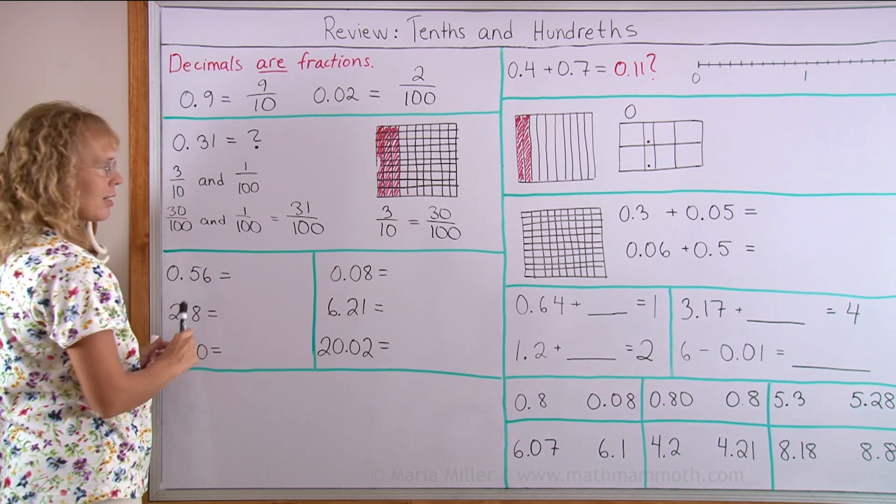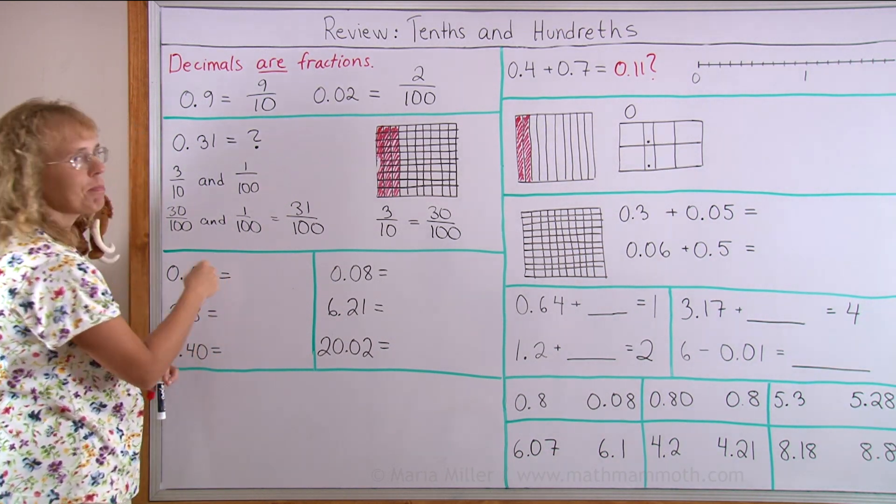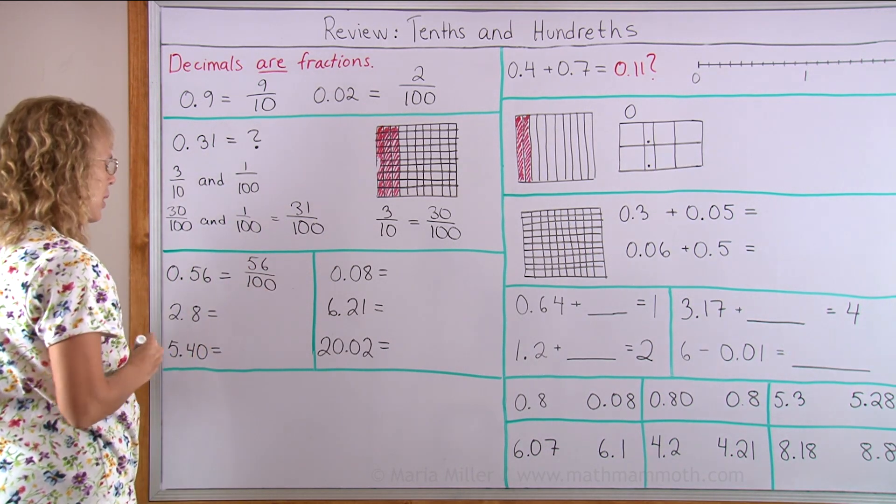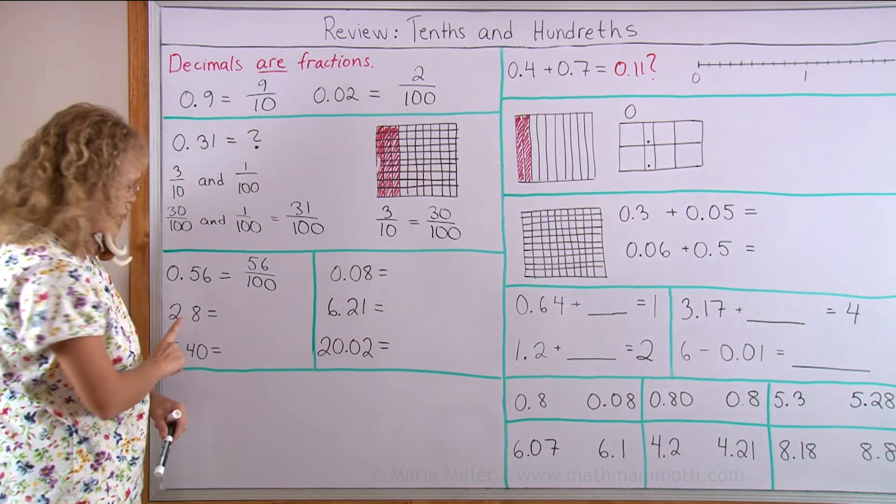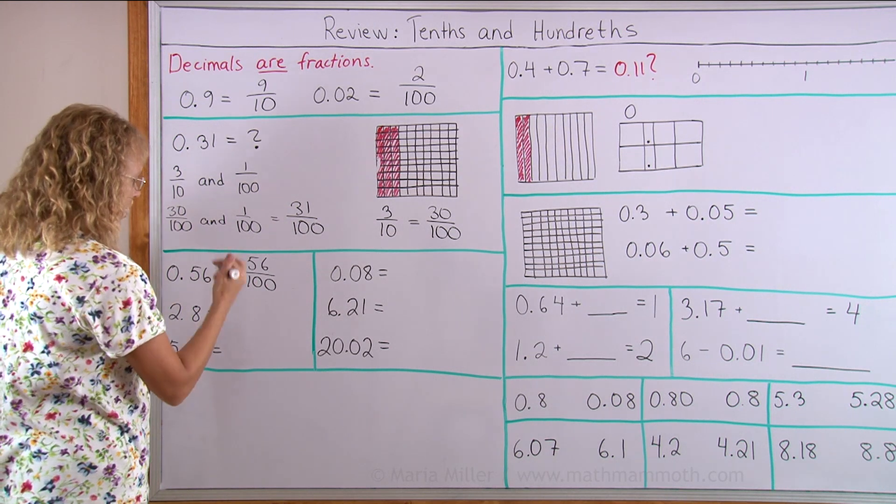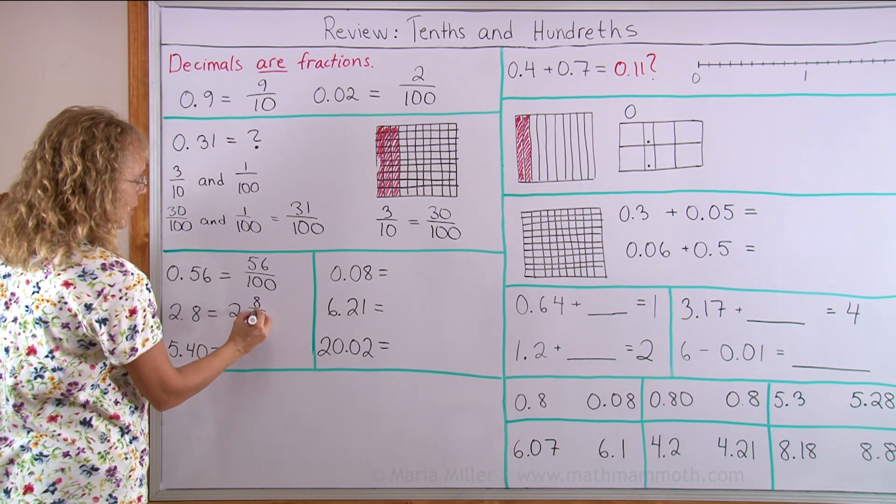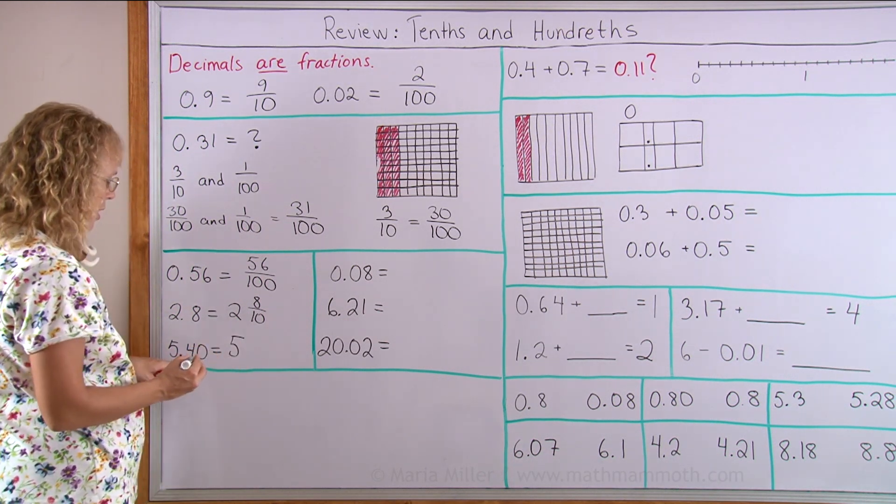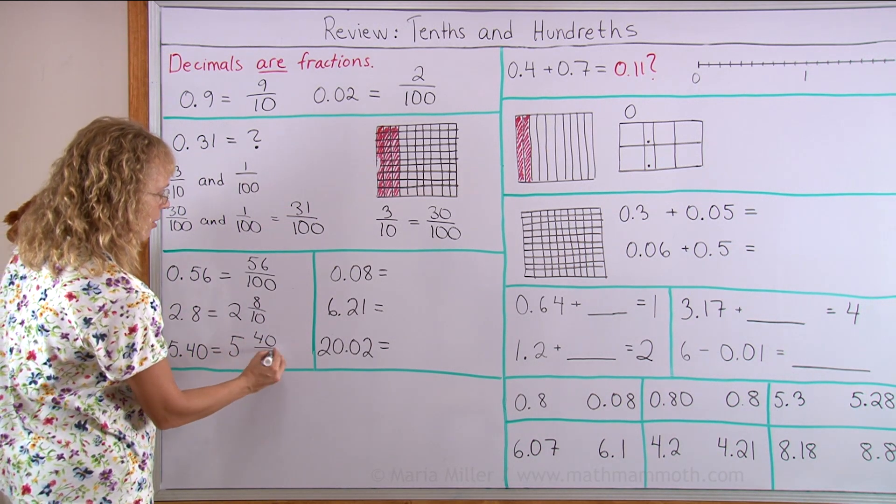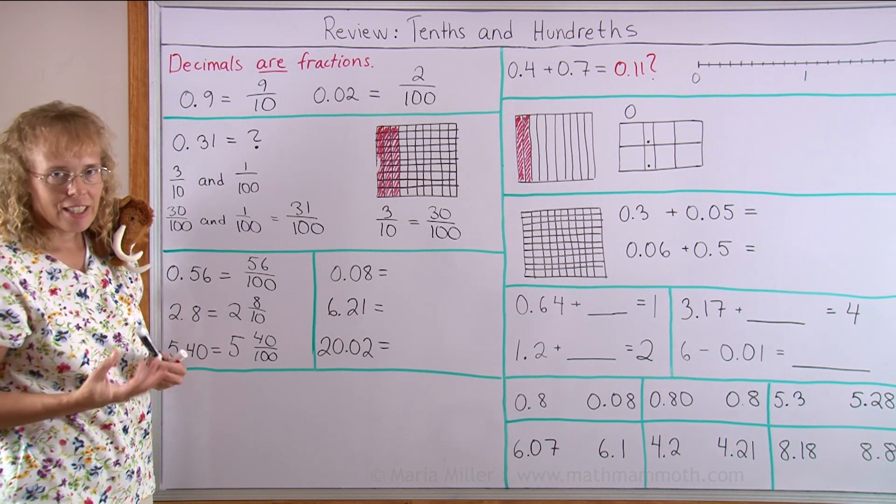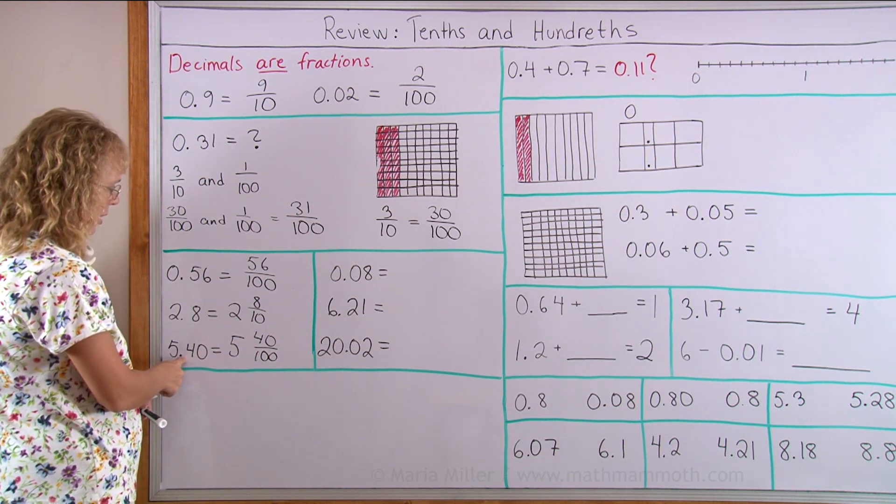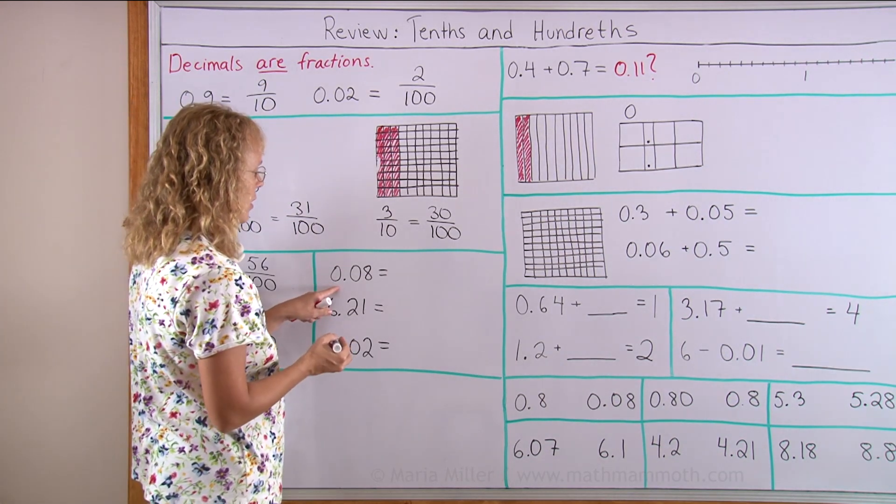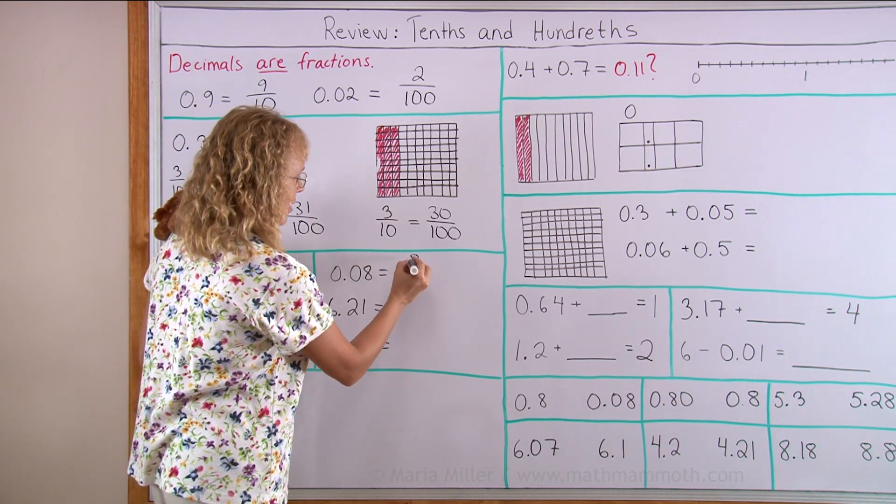This one is 0.56. The other way to read it is as 56 hundredths, and as a fraction it is 56 hundredths. This one is 2.8 or 2 and 8 tenths, so as a fraction or mixed number we write 2 and 8 tenths. This one is 5.40, as a fraction or mixed number it is 5 and 40 hundredths. It could be simplified to 4 tenths, which means this is actually equal to 5.4.